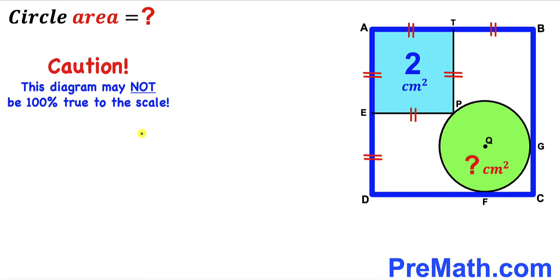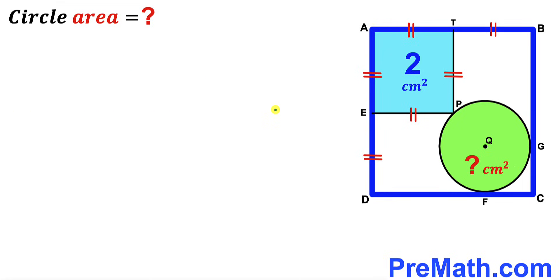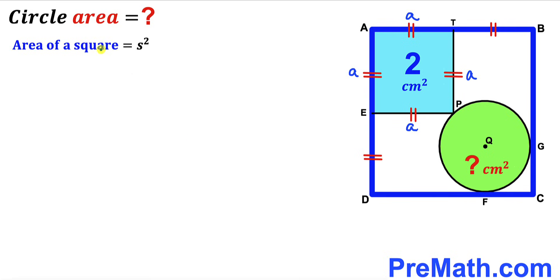Let's go ahead and get started. Let's focus on this blue shaded square AEPT. I am going to label its side length as lowercase a, then all these side lengths are going to be lowercase a as well across the board. Now let's recall the area of the square formula: area is always equal to S squared, where S represents the side length of the square. In our case the side length is lowercase a, whereas the area has been given to us as 2.